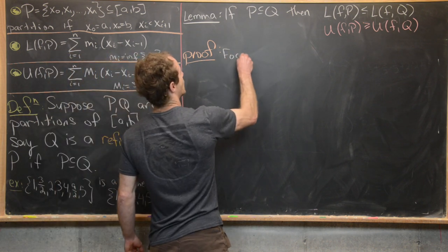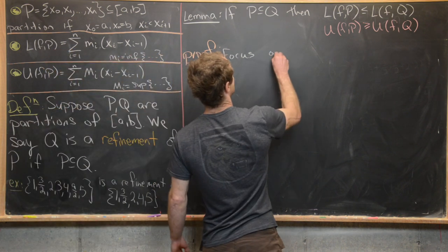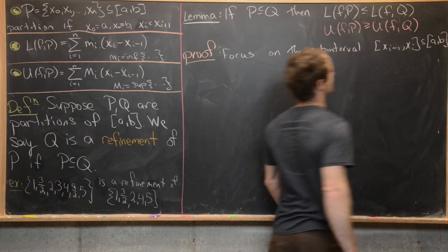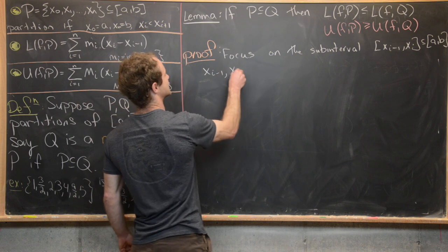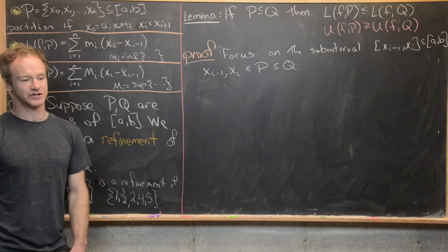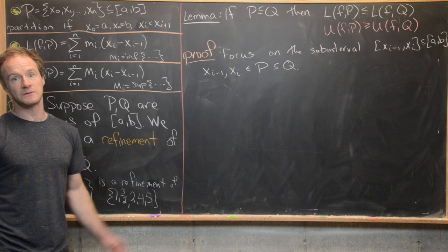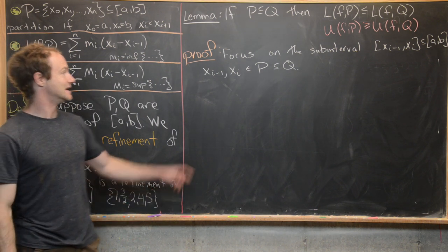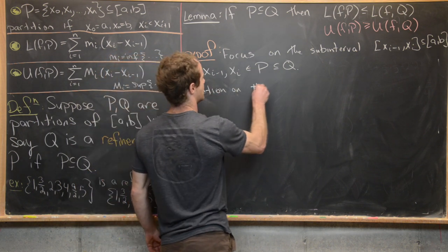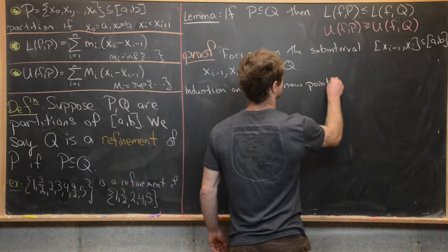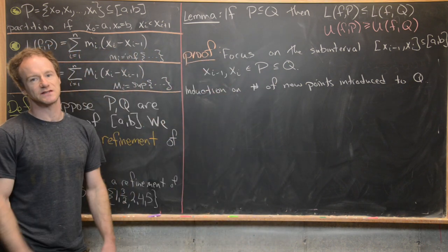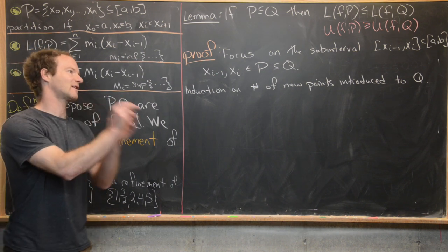We're going to focus on one of the sub-intervals of P, which we'll call [xᵢ₋₁, xᵢ]. That is a sub-interval of [a,b], and the two points xᵢ₋₁ and xᵢ are inside P, which is a subset of Q, so they're part of both partitions. We proceed by induction on the number of points that are added to partition P to turn it into Q, specifically on this sub-interval. If we prove it for an arbitrary sub-interval, it clearly extends to the whole partition.